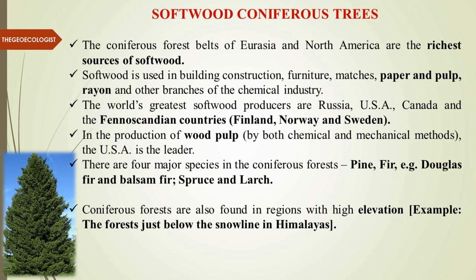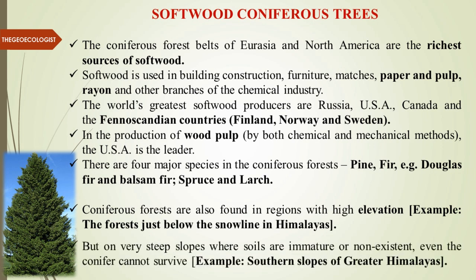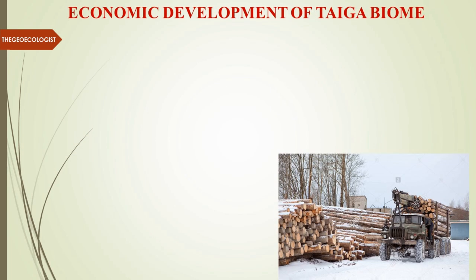There are four major species in coniferous forests: pine, fir — including Douglas fir and balsam fir — spruce, and larch. Coniferous forests are also found in other regions at higher elevations. The best example is the Himalayas, where these forests are found just below the snow line. On steep slopes with immature soils, even conifers cannot survive, which is why they are absent on the southern slopes of the greater Himalayas and found mainly on the northern slopes where soils are mature.